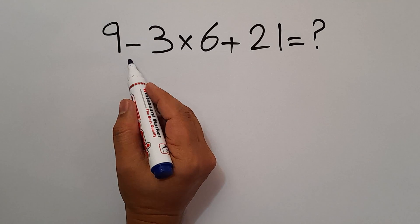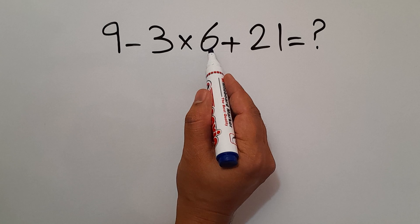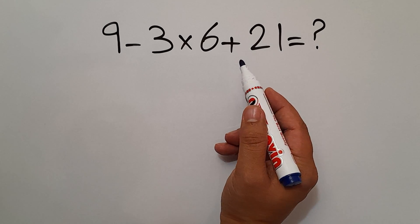Hey guys, welcome to MathJoy. In this video, we want to find the value of this expression: 9 minus 3 times 6 plus 21. Are you ready to solve? Let's go down and get started.